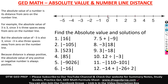And also, if we were to find the absolute value of negative three, it is also three, because you always count to zero — how many spaces is negative three from zero? That is one, two, and three.